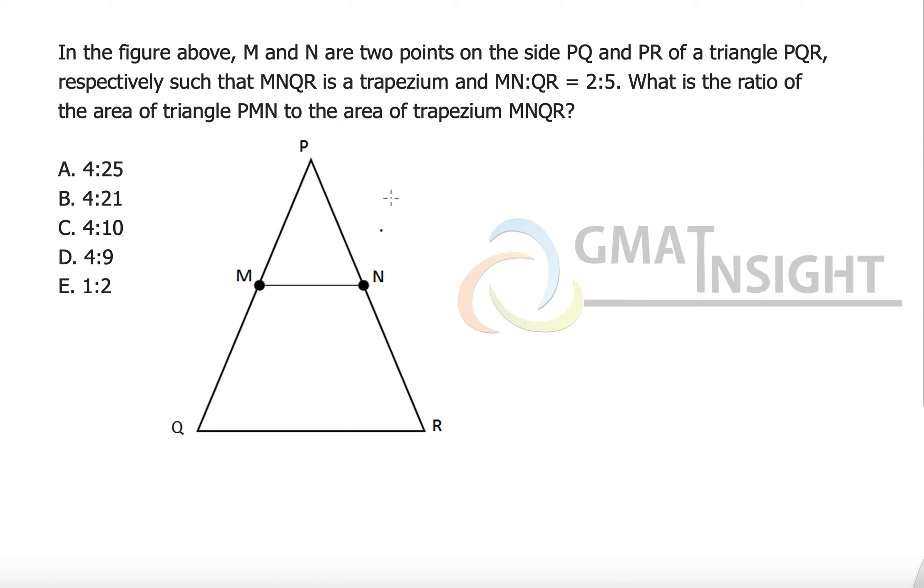In the figure above, M and N are two points on the side PQ and PR of triangle PQR respectively such that MNQR is a trapezium.